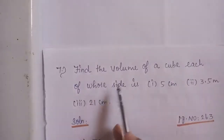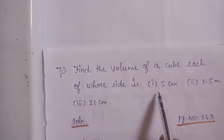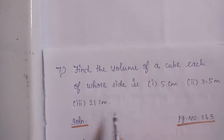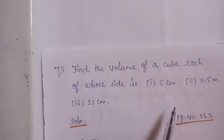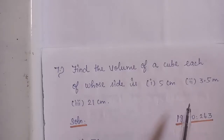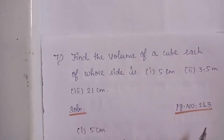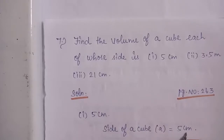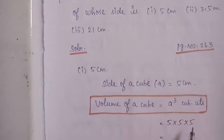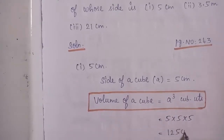Question number 7: Find the volume of a cube each of whose side is — Option 1: 5 cm, Option 2: 3.5 m, Option 3: 21 cm. The problem belongs to page number 263. We know the volume of cube formula is a cube cubic units. For Option 1, side a = 5 cm. Volume = 5 into 5 into 5 = 125 cm cube.